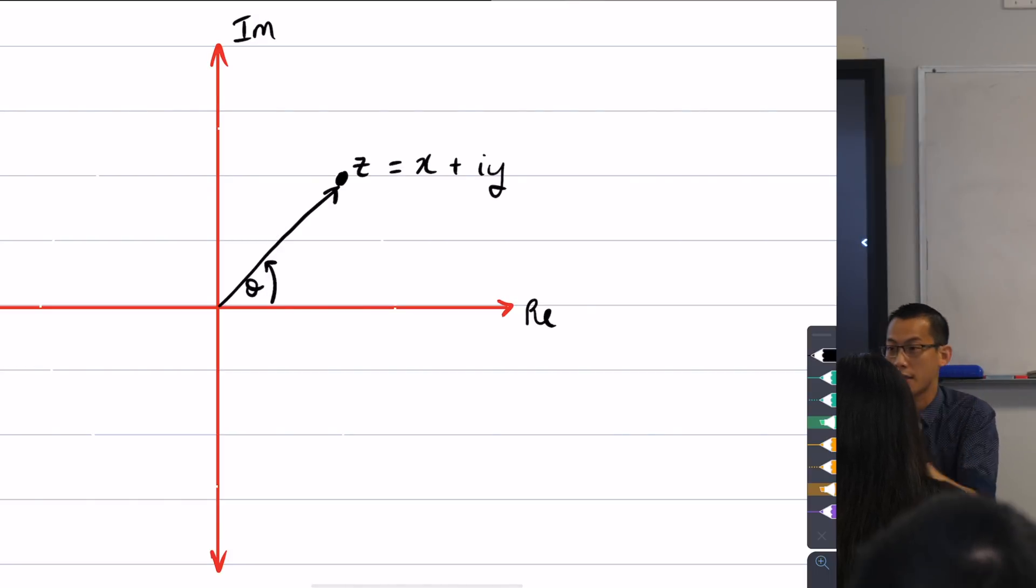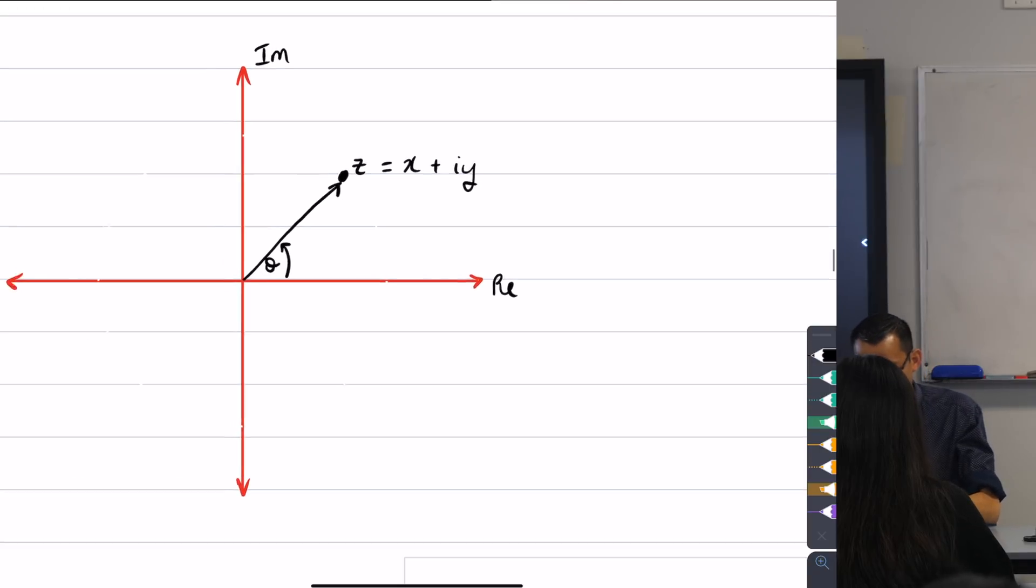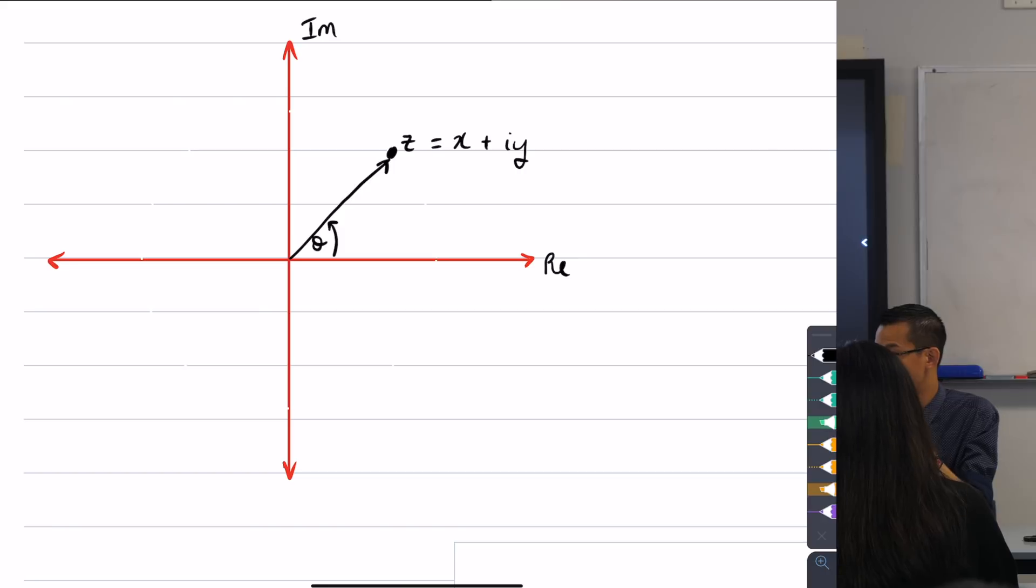Okay, now unlike our globe which has two poles, a north and a south, our complex plane really kind of only has one pole and that is right there in the center. It's the origin where the axes meet. Okay, so as a consequence, rather than using a second angle of rotation—I've got one there, there's theta measured from the positive real axis to get to z—after you know which direction you're facing in, you just have to know how far along to go.